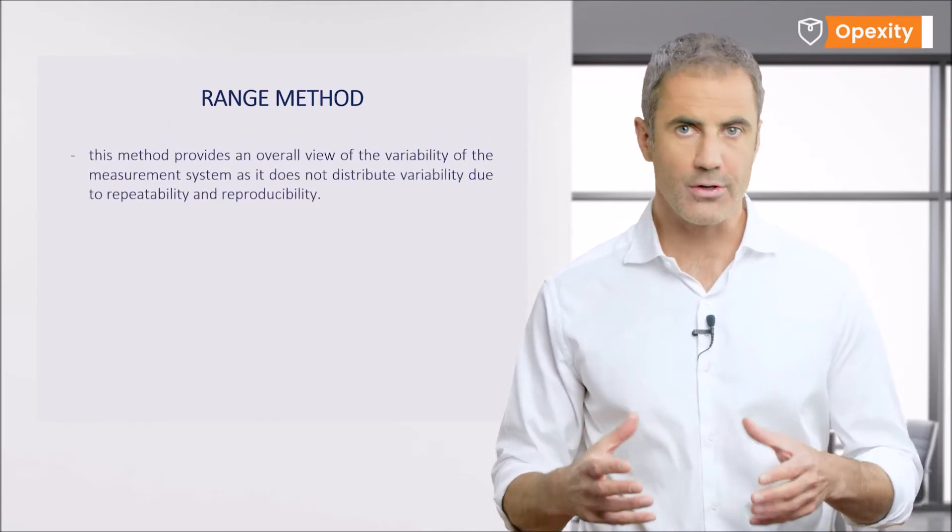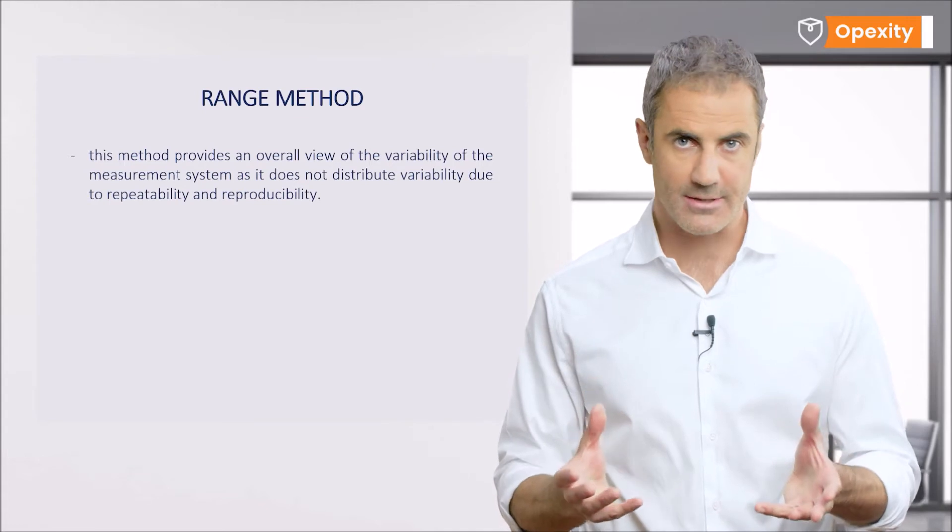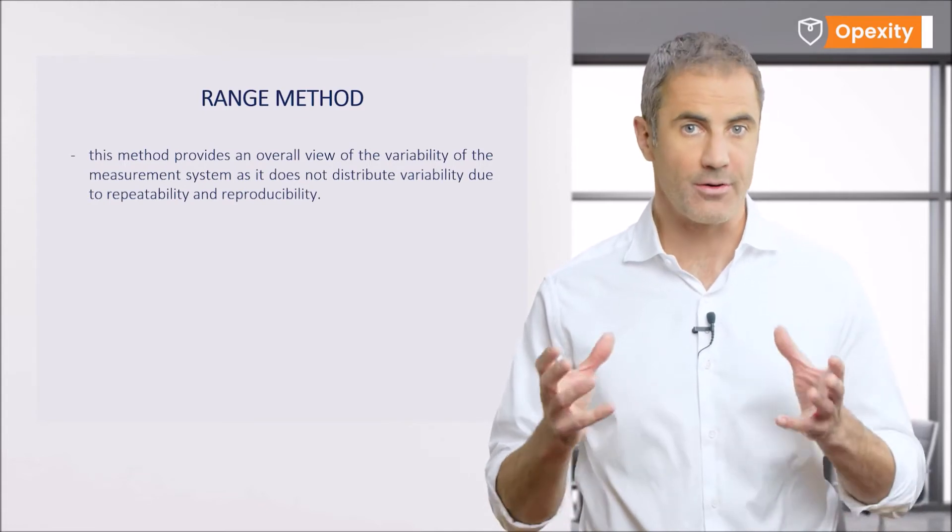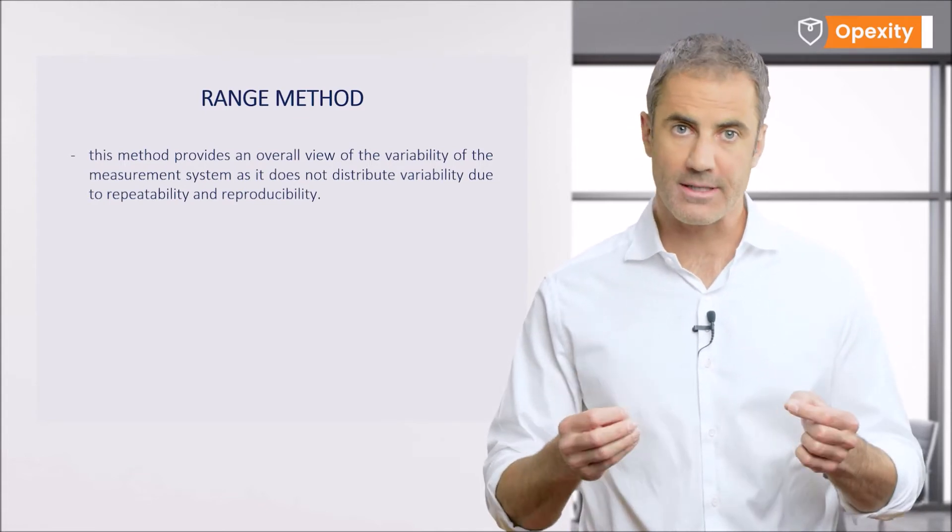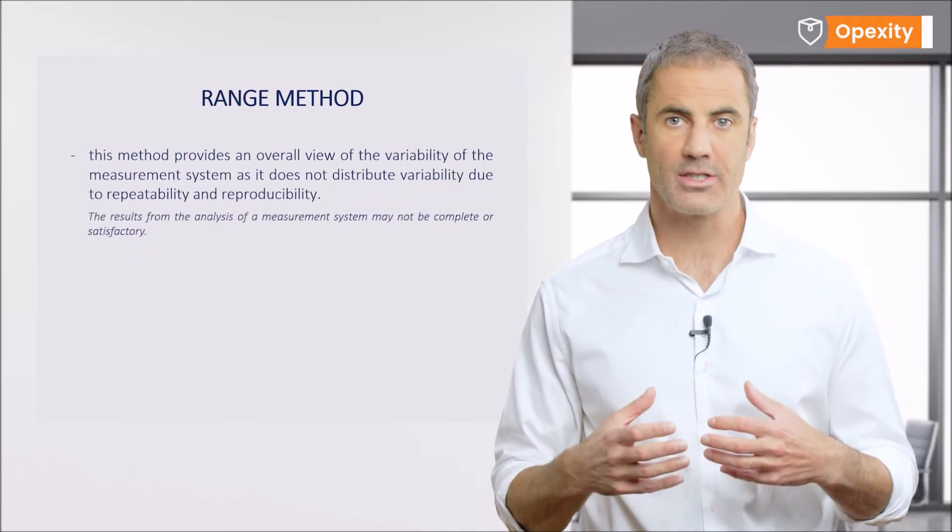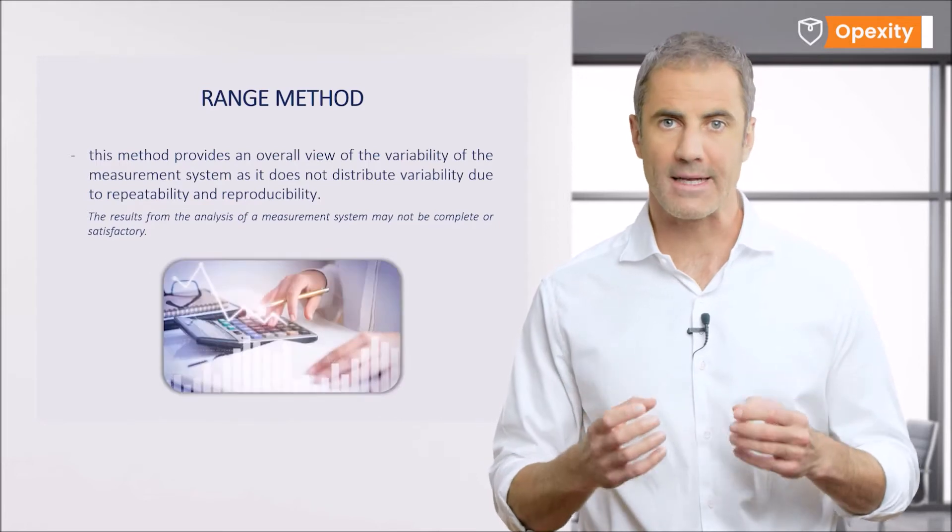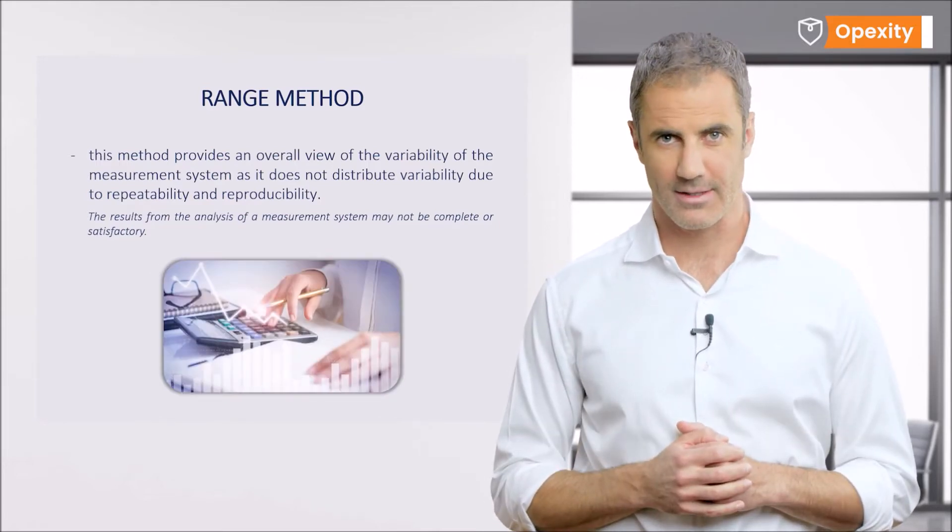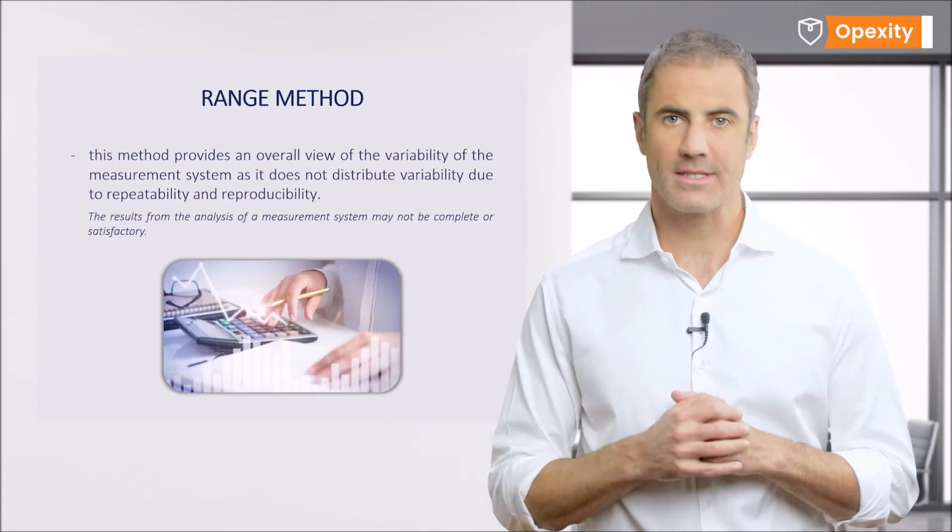Range method. This method can provide an overall view of the variability of the measurement system as it does not distribute variability due to repeatability and reproducibility. Therefore, the result from the analysis of a measurement system may not be complete or satisfactory. This method will not be discussed either.